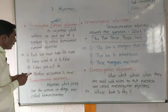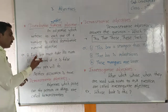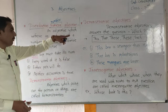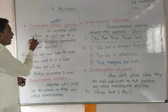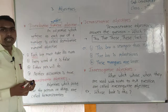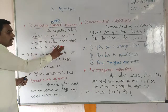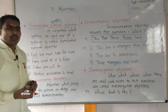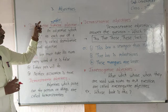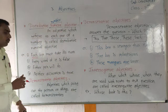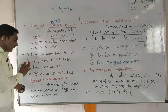For example: 'Each boy must take his turn.' Here, the word 'each' refers to each one of a number, so 'each' is a distributive numeral adjective. Next example.